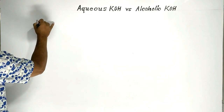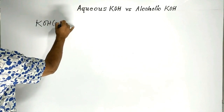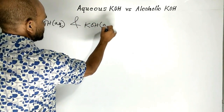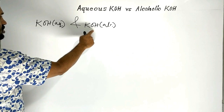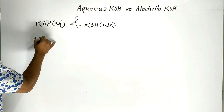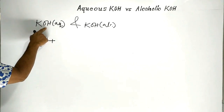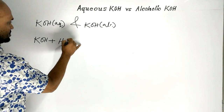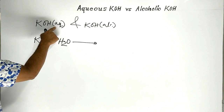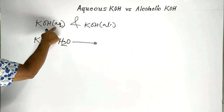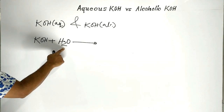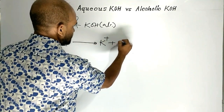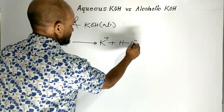First of all, let us learn about aqueous solution of potassium hydroxide and alcoholic solution of potassium hydroxide. Aqueous solution of potassium hydroxide means potassium hydroxide is dissolved in water — aqua means water. When potassium hydroxide is dissolved in water, it ionizes to potassium ion and hydroxide ion.